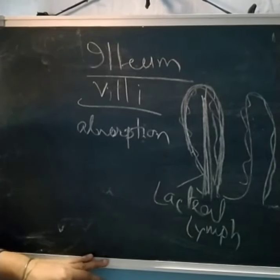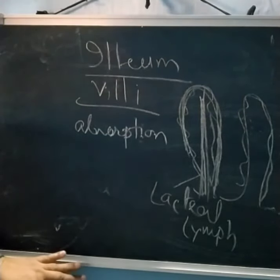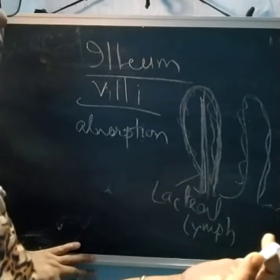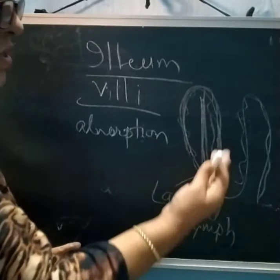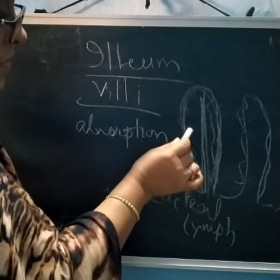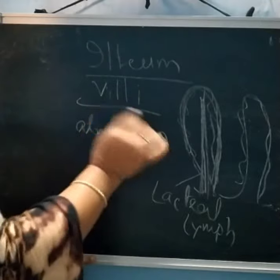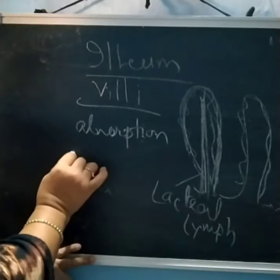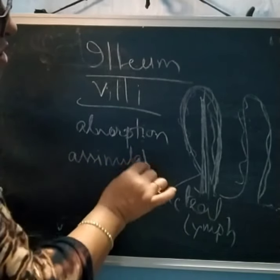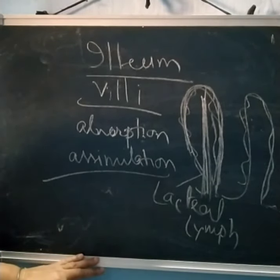Villi in the ileum absorb the digested food — glucose, amino acids, fatty acids, and glycerol. Each projection is called a villus. Blood then carries these nutrients to the cells, which is called assimilation. When nutrients reach the cells and are used in the process of respiration, that is called assimilation of the digested food.